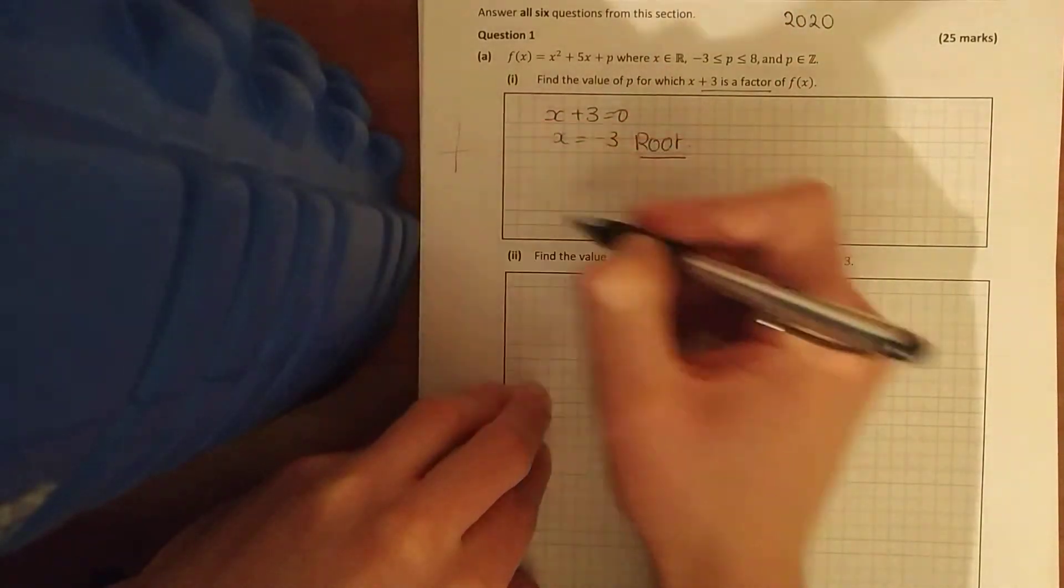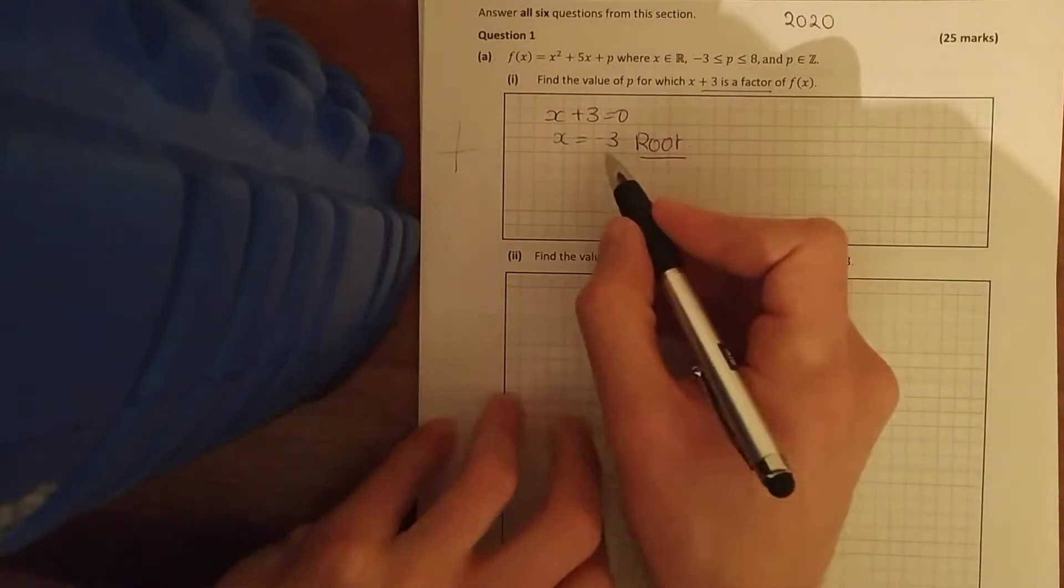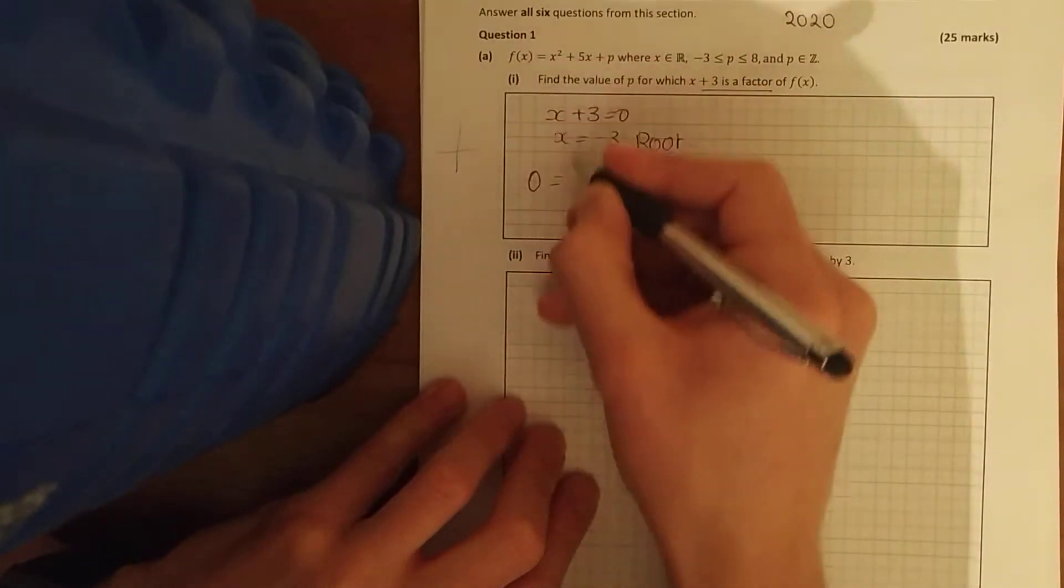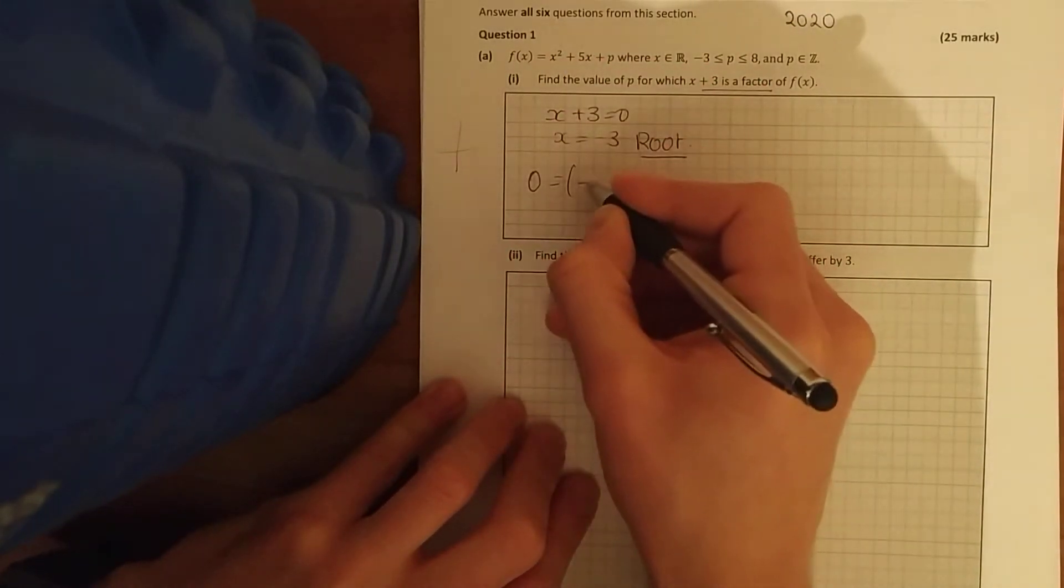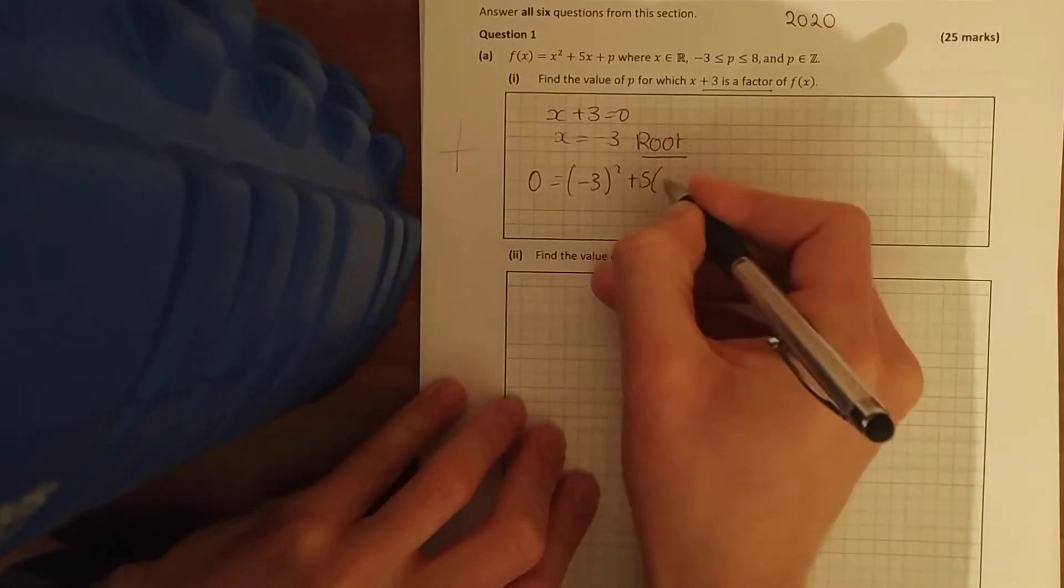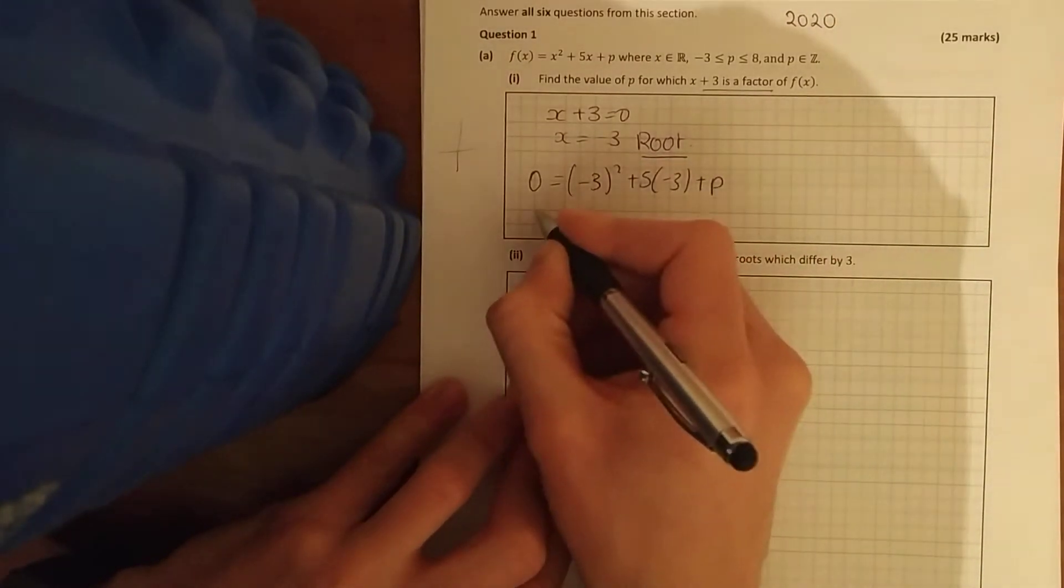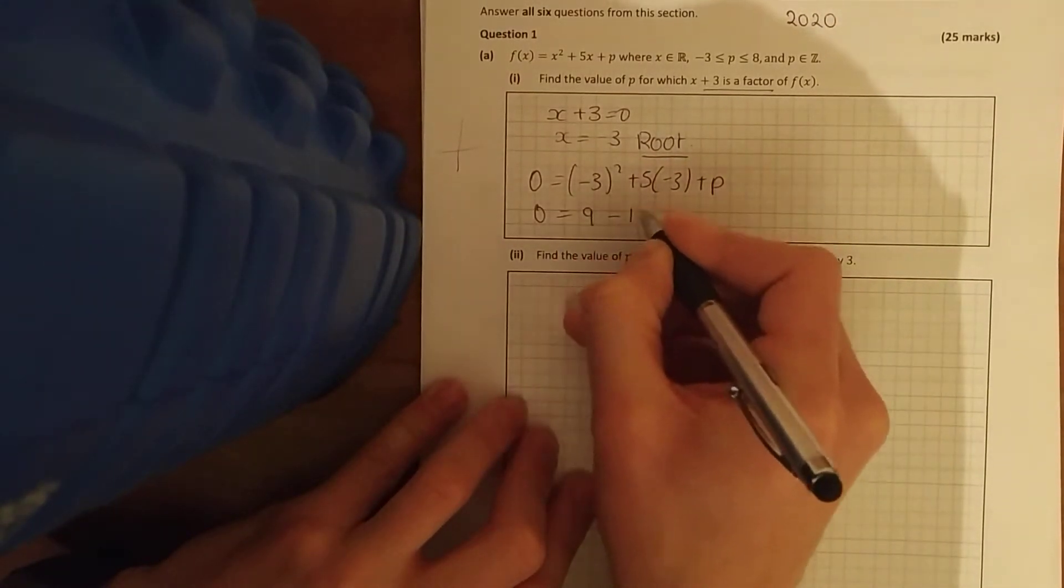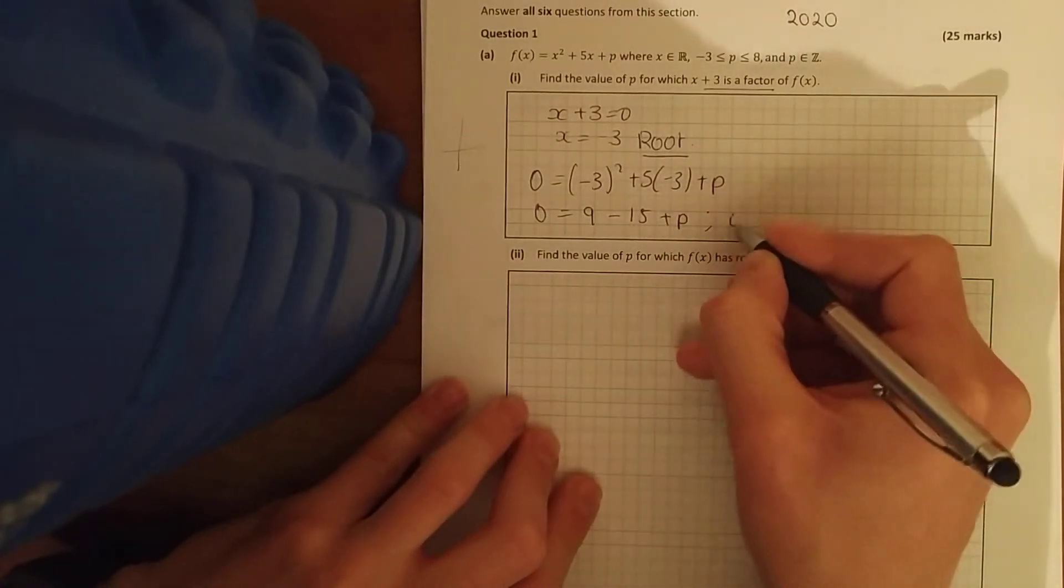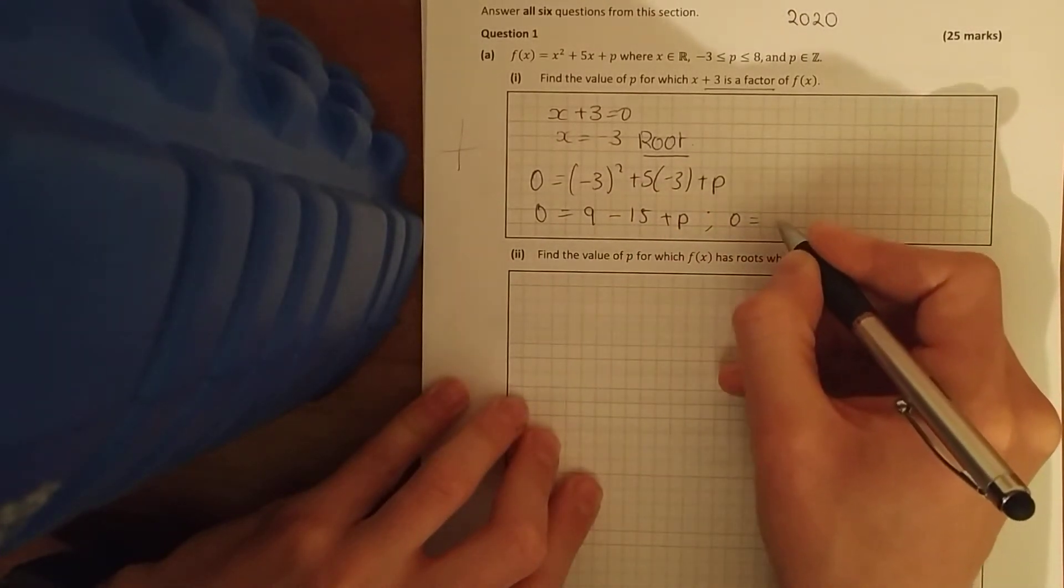So here we have 0 equals x minus 3 squared plus 5 times minus 3 plus p. Tidy that up: 9 minus 15 plus p, and there we have 0 equals 9 minus 15 is minus 6 plus p.